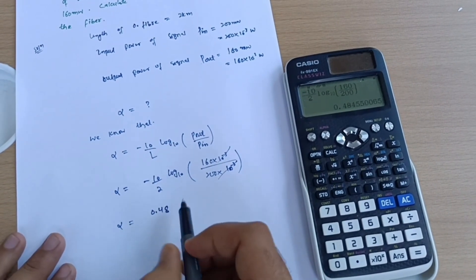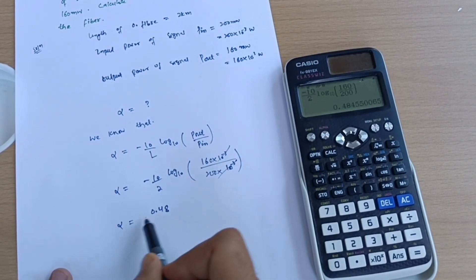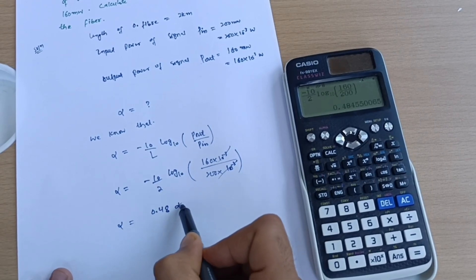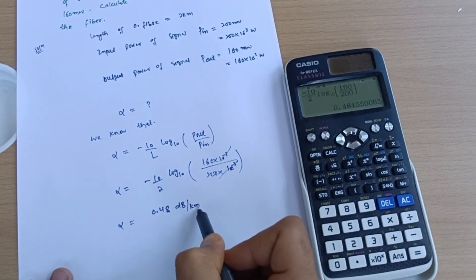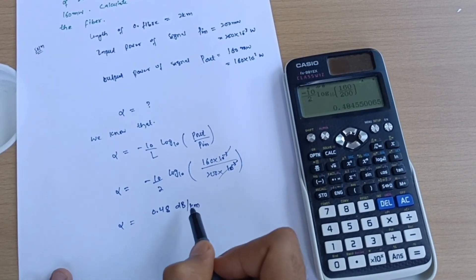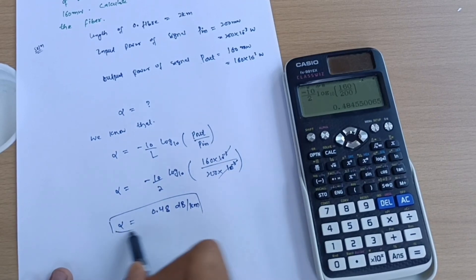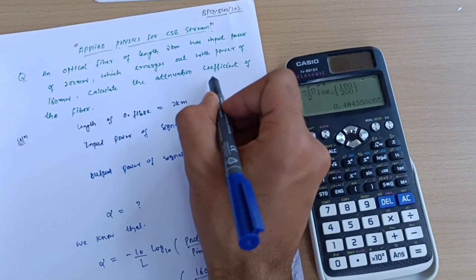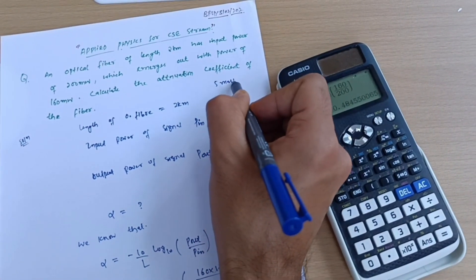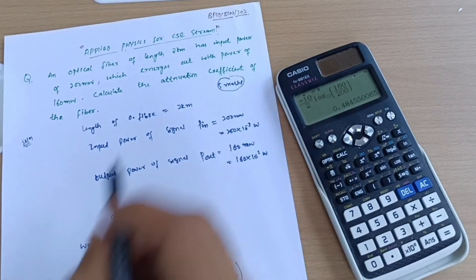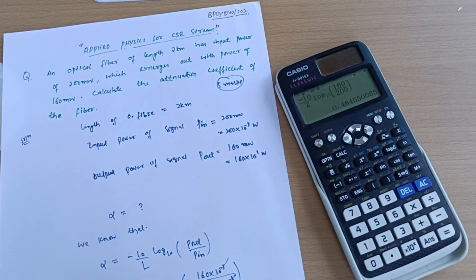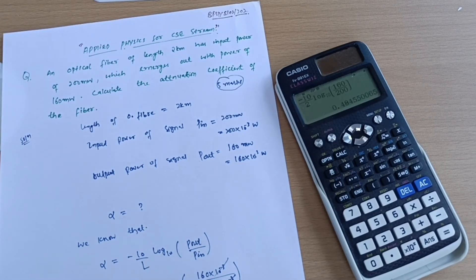You should remember the unit of the attenuation coefficient is decibels per kilometer. This is your answer for the attenuation coefficient - 0.48 decibels per kilometer. This question carries five marks, so you should not lose these simple marks. As I earlier mentioned, these are totally formula-based questions; the only thing is you should recognize what is given and what we have to calculate. So this is all about today's video, thank you.